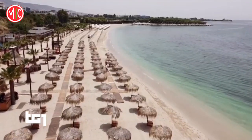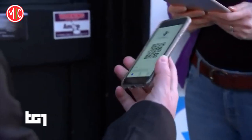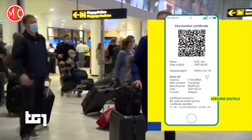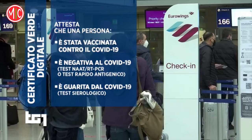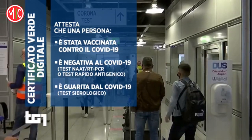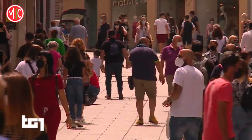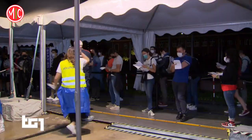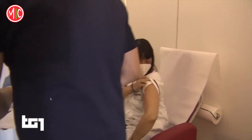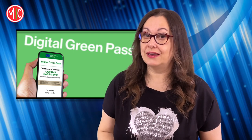I viaggi e gli spostamenti tra stati membri dell'Unione Europea sono attualmente consentiti a chi dispone della certificazione verde Covid-19, un documento digitale o cartaceo che attesta l'avvenuta vaccinazione, la guarigione o un risultato negativo al test. C'è comunque preoccupazione per l'arrivo in Italia della cosiddetta variante Delta del coronavirus, che ha causato una gravissima ondata di contagi in India e che si sta diffondendo rapidamente nel Regno Unito e in Europa. Il commissario straordinario per l'emergenza, Francesco Figliuolo, rimane cautamente ottimista, ma ribadisce che non è ancora il momento di abbassare la guardia.